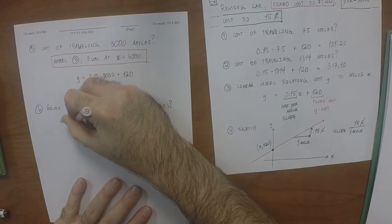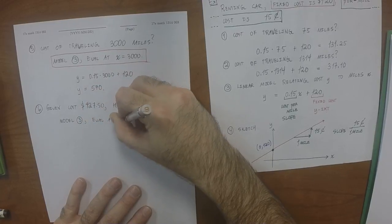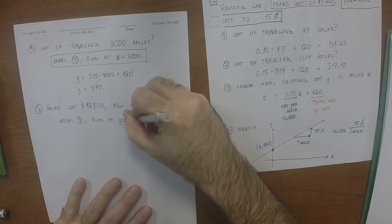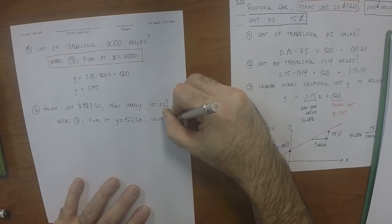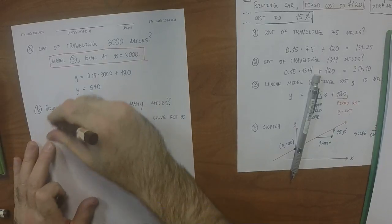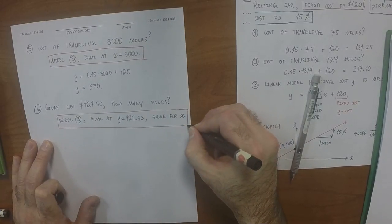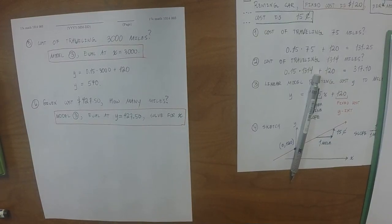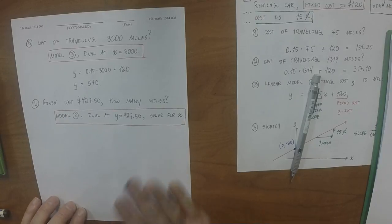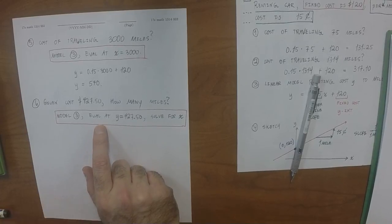So now we're again using the model that we determined in part 3, we want to evaluate at y is 427.50. And after we do that, we want to solve for x. Okay, now, once you have translated the story into math, the rest of it's straightforward. So before I do that, is there any question about why this is the translation? Because once you see that this is it, then it's just mechanical from here.